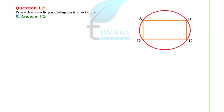Question 12: we have to prove that a cyclic parallelogram is a rectangle. Here we can see that parallelogram ABCD is cyclic — this parallelogram lies on a circle. We have the cyclic quadrilateral property: the sum of opposite angles is 180 degree. So this property we use.